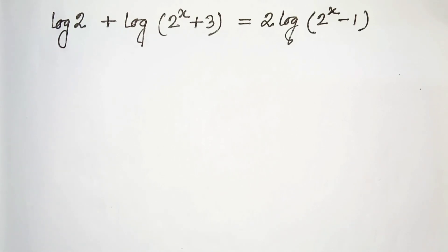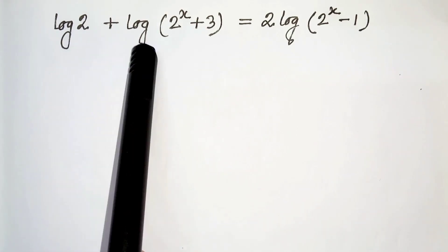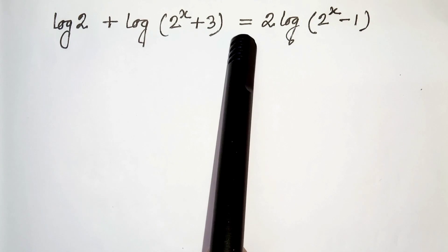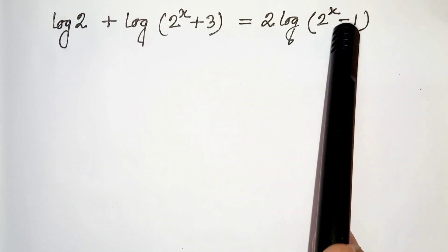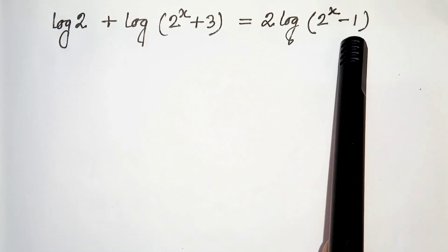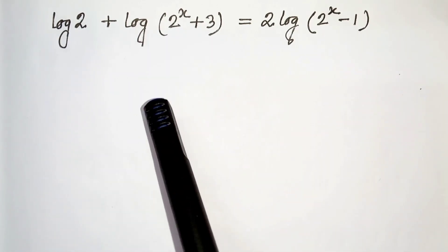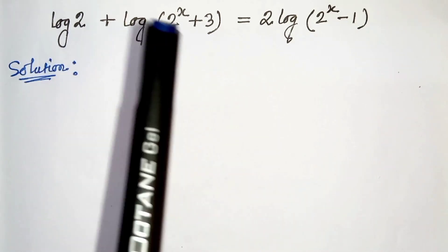Hello everyone. In this video we have log of 2 plus log of 2 to the power x plus 3, equals to 2 times log of 2 to the power x minus 1. We have to solve this and find the value of x. So let's start.